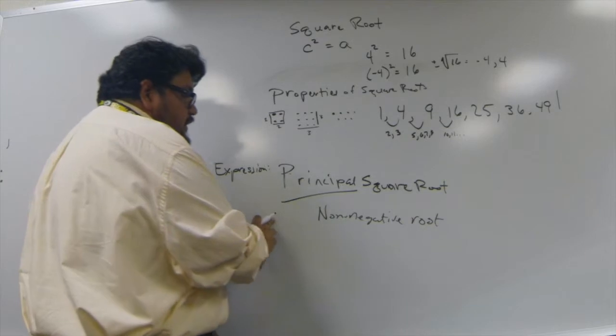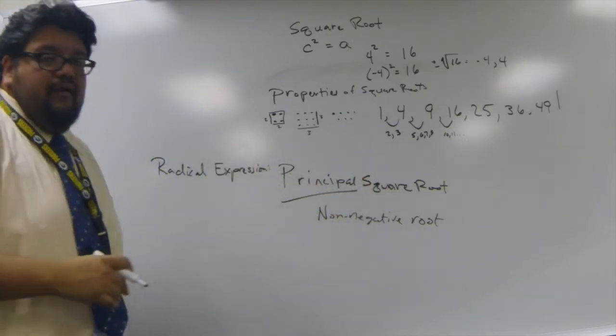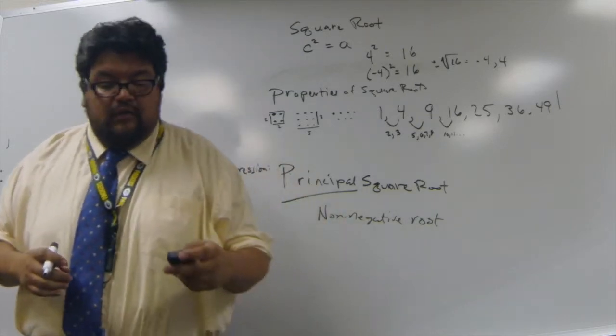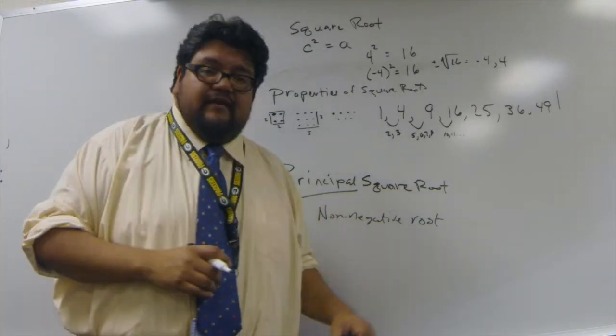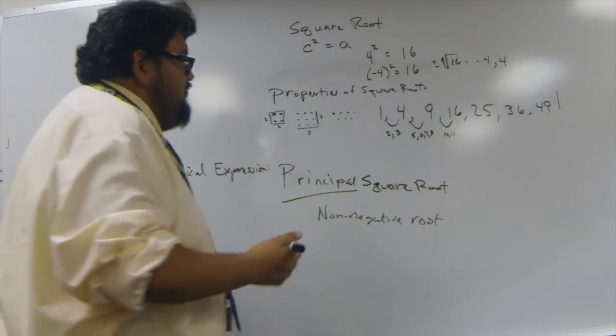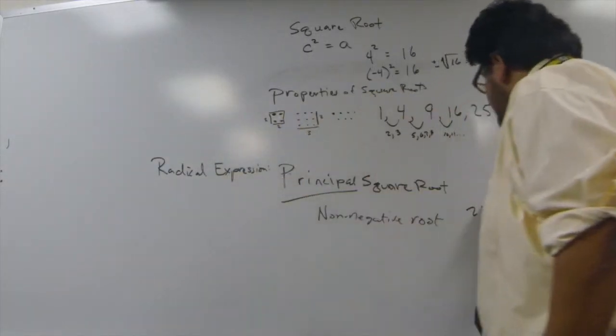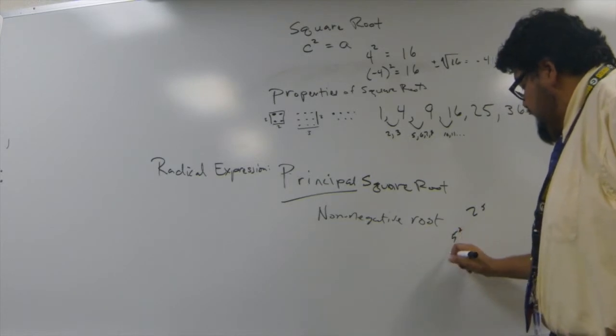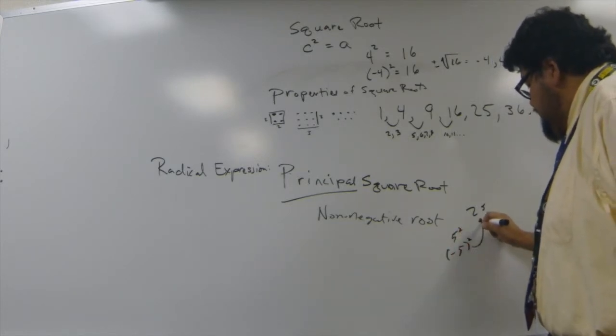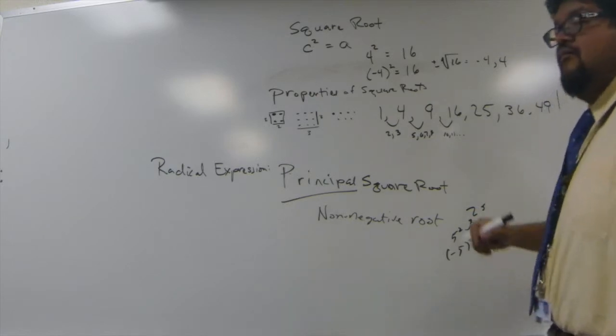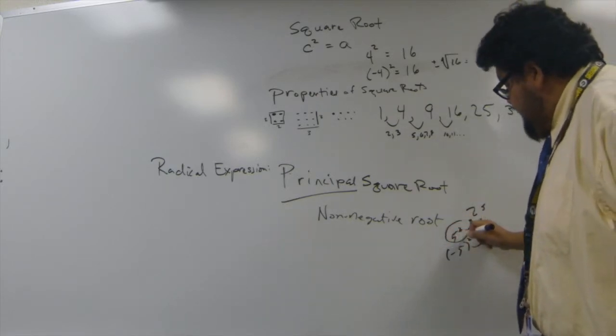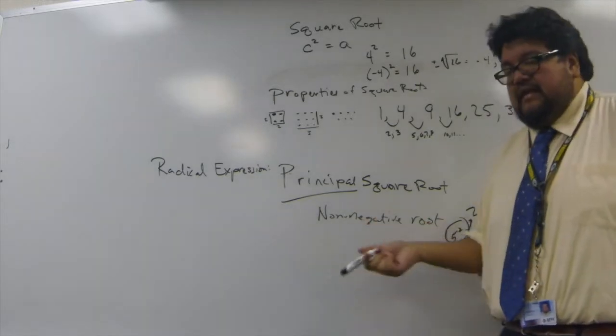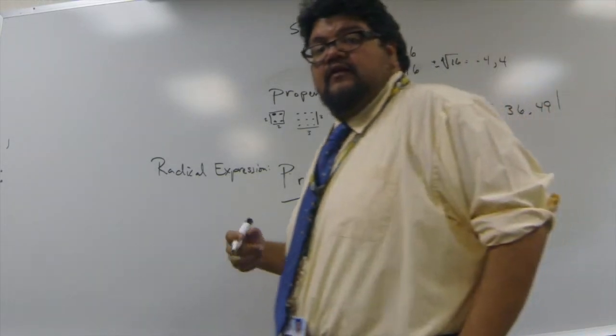All non-negative numbers have a square root. That's the property of square roots. However, the principal square roots are going to be only the non-negative roots. Meaning, of the number 25, 25 is five squared, and it's also negative five squared. Both of these numbers mean 25. But only 5 is the principal square root of 25, because it is the non-negative square root of 25.